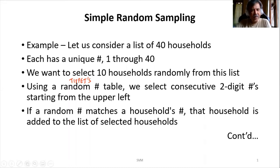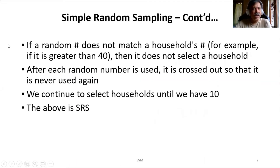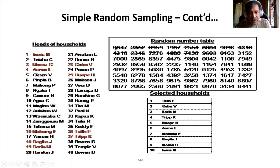Starting from the upper left, if the random number matches your household number, that household is added to the list of selected households. If the random number does not match — for example if it is greater than 40 — then it does not select a household and we ignore it. After each random number is used, it is crossed out so that it is never used again.